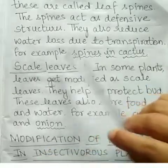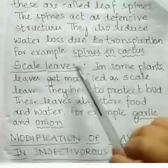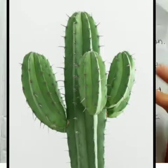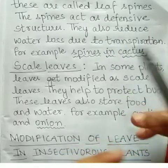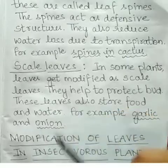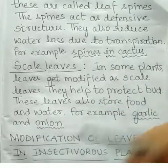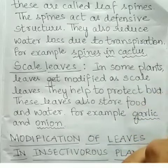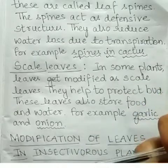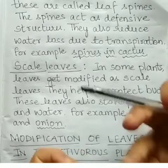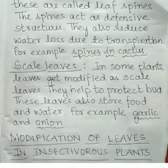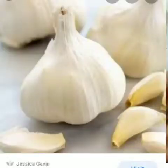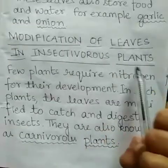An example of leaf spines is the cactus plant — the spines in cactus are actually modifications of leaves. Then come scale leaves. In some plants, leaves get modified as scale leaves to help protect the bud. These leaves may also store food — they may be dry, as in garlic, or fleshy, as in onion.